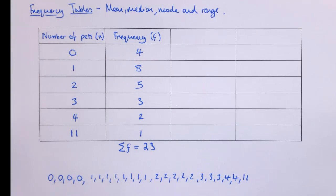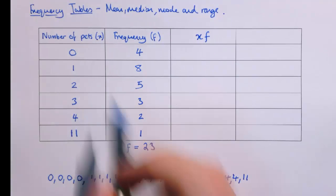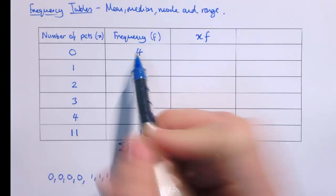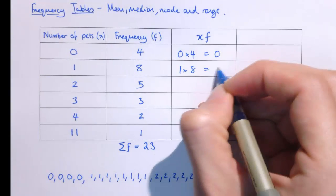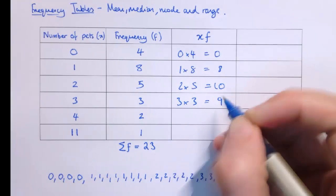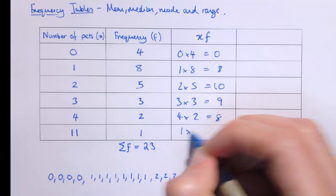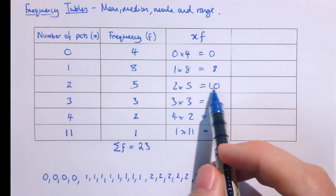To add up the values quickly, I want 4 zeros, 8 ones, 5 twos, 3 threes, 2 fours, and 1 eleven. Rather than adding them up one at a time, I'll put another column in the table called xf, because I'm going to multiply x by f — the number of pets times the frequency. So: 0 times 4 is 0, 1 times 8 is 8, 2 times 5 is 10, 3 times 3 is 9, 4 times 2 is 8, and 1 times 11 is 11. That adds up the list efficiently — rather than doing 2 plus 2 plus 2 plus 2 plus 2, I've just got 2 times 5, which is 10.